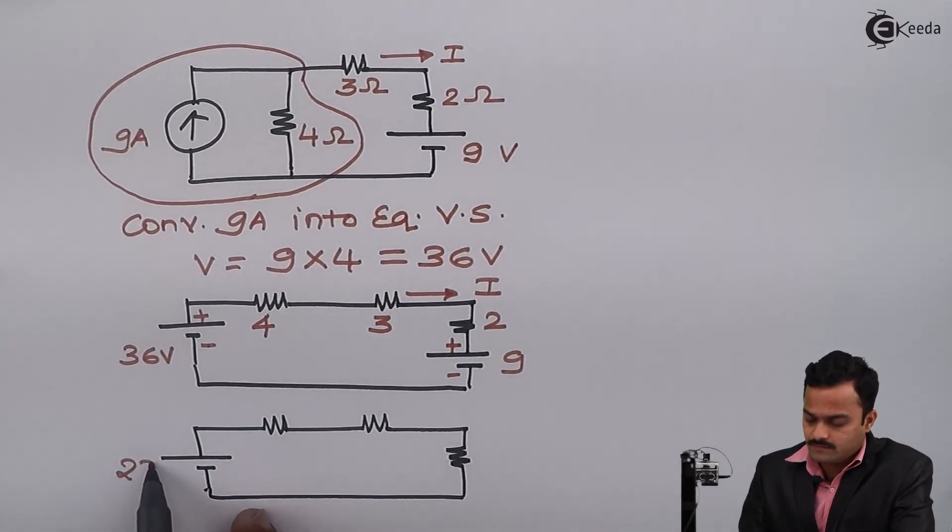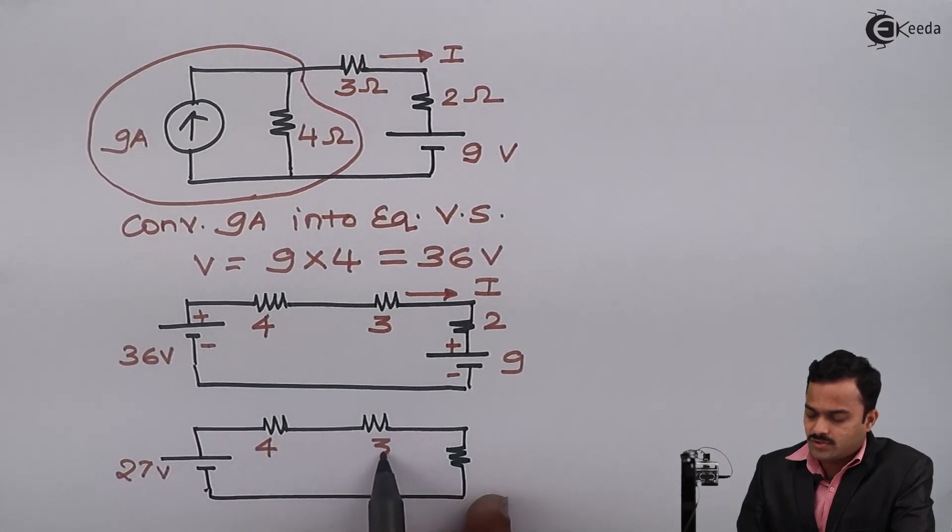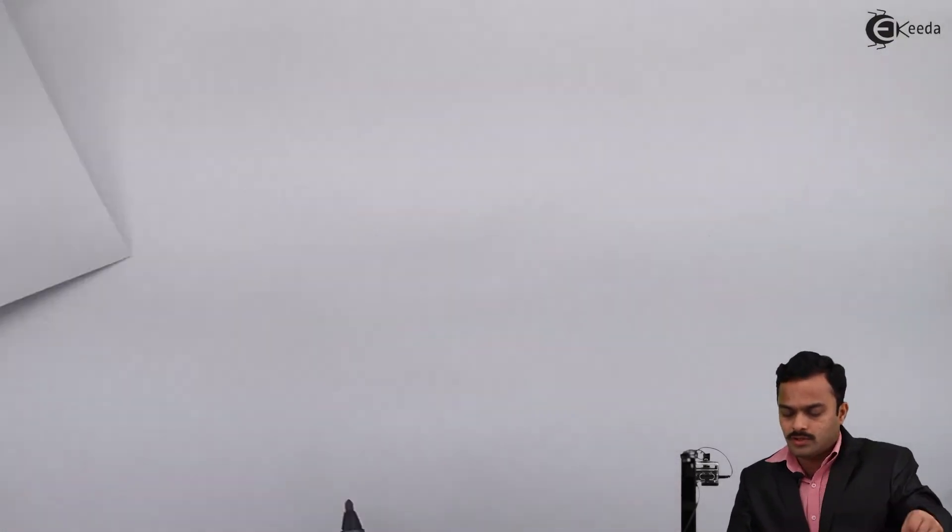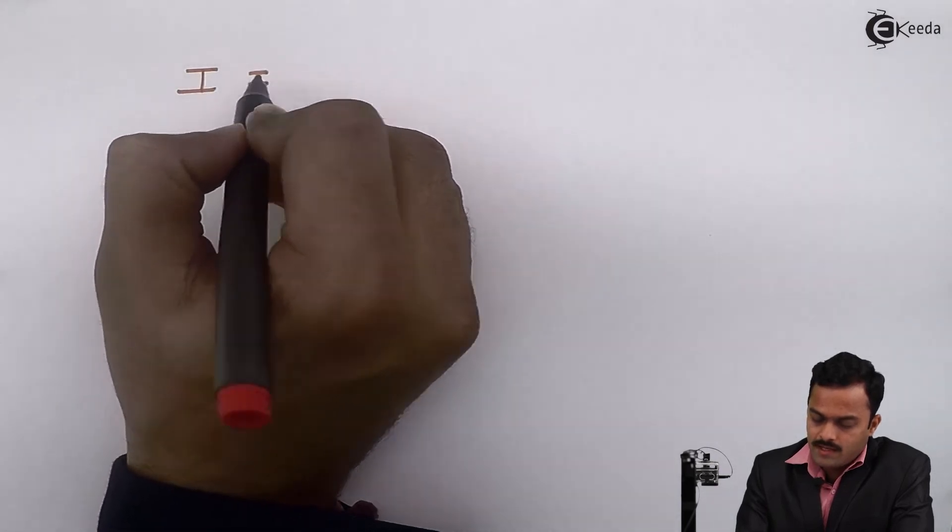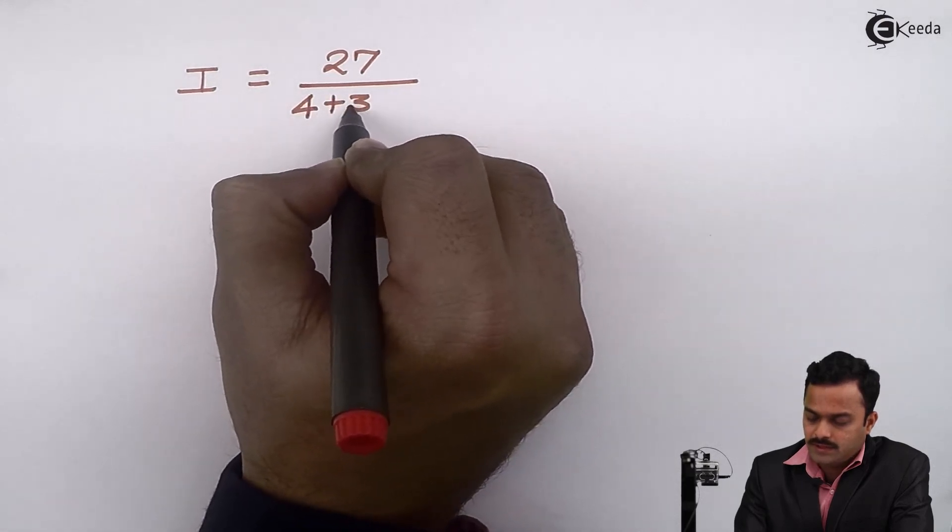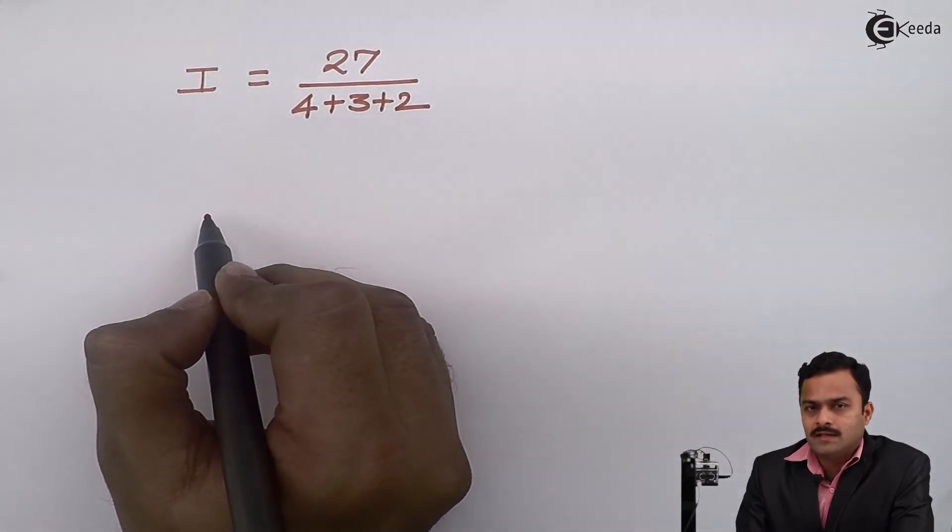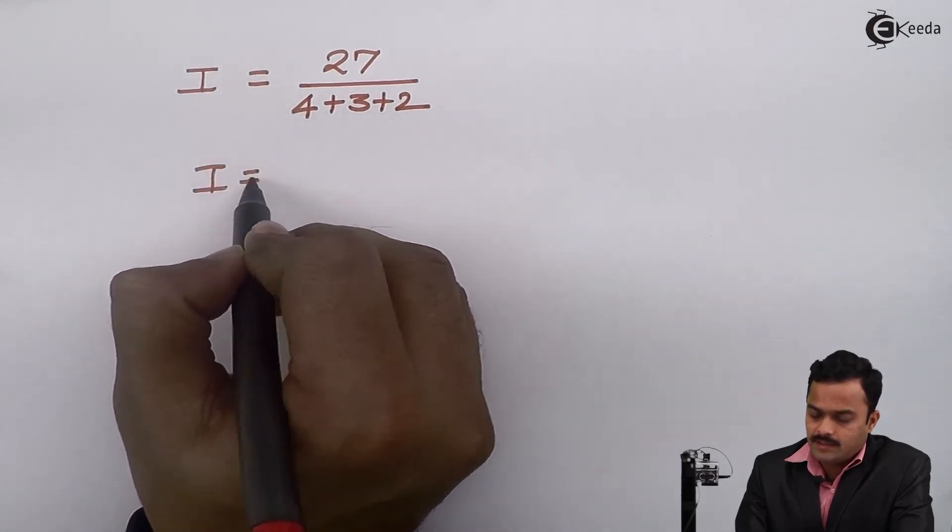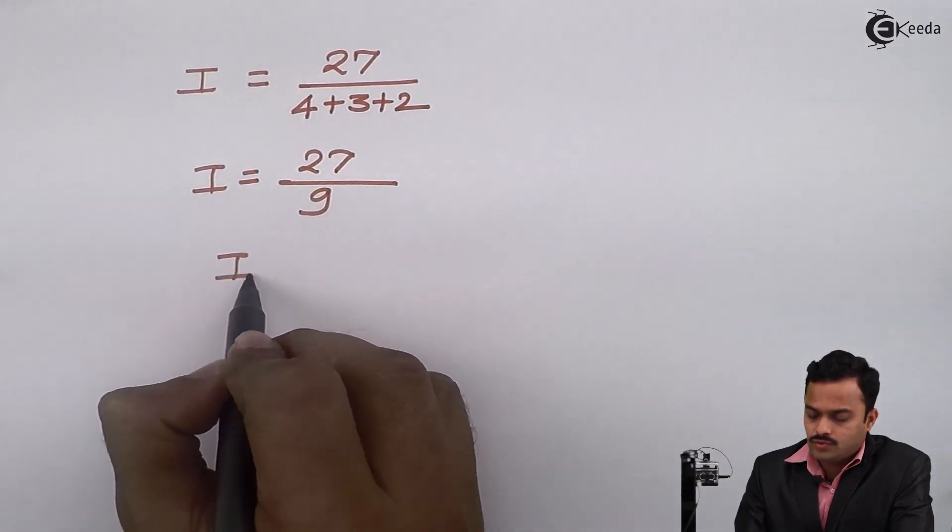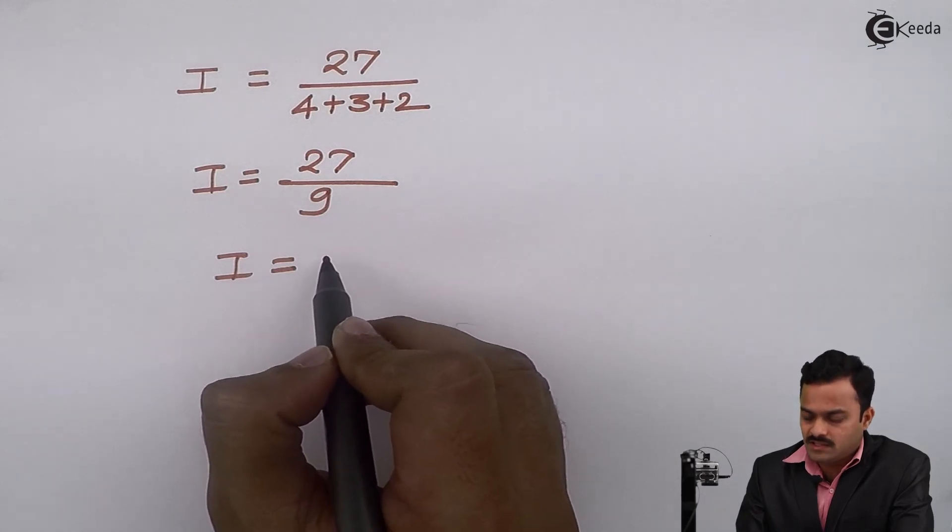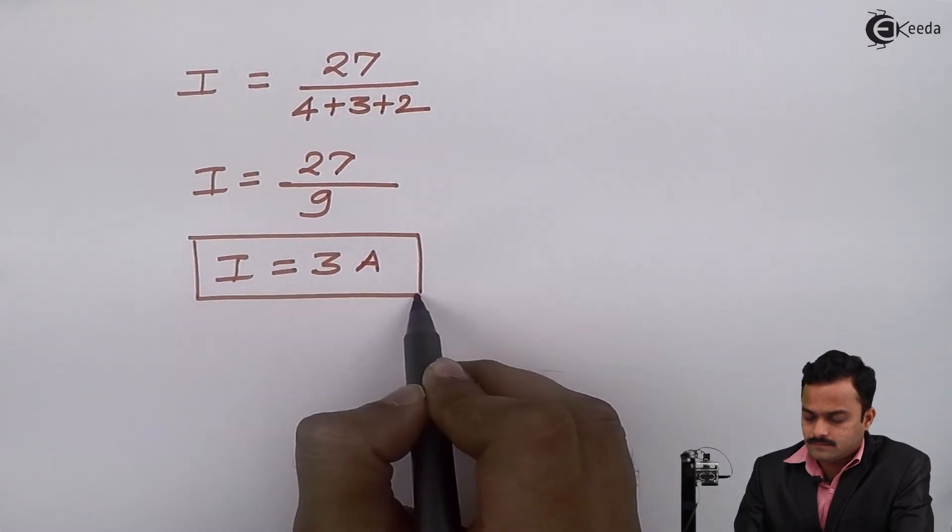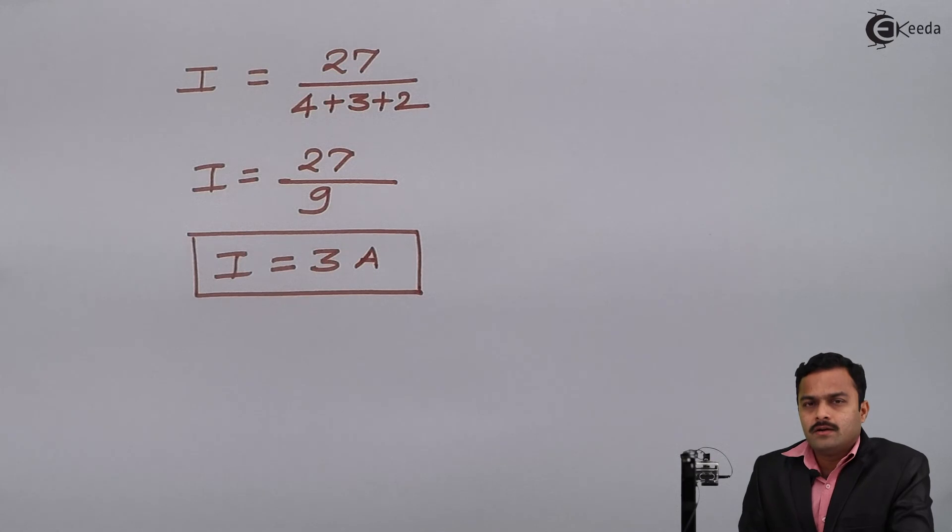The rest of the circuit remains as it is. Here I can apply Ohm's law to get the value of I. I is given as 27 divided by 4 plus 3 plus 2, which is the total series resistance. Ultimately, I will get I as 27 divided by 9, which is 3 amperes. The value of current flowing through the 3 ohm resistor is 3 amperes.